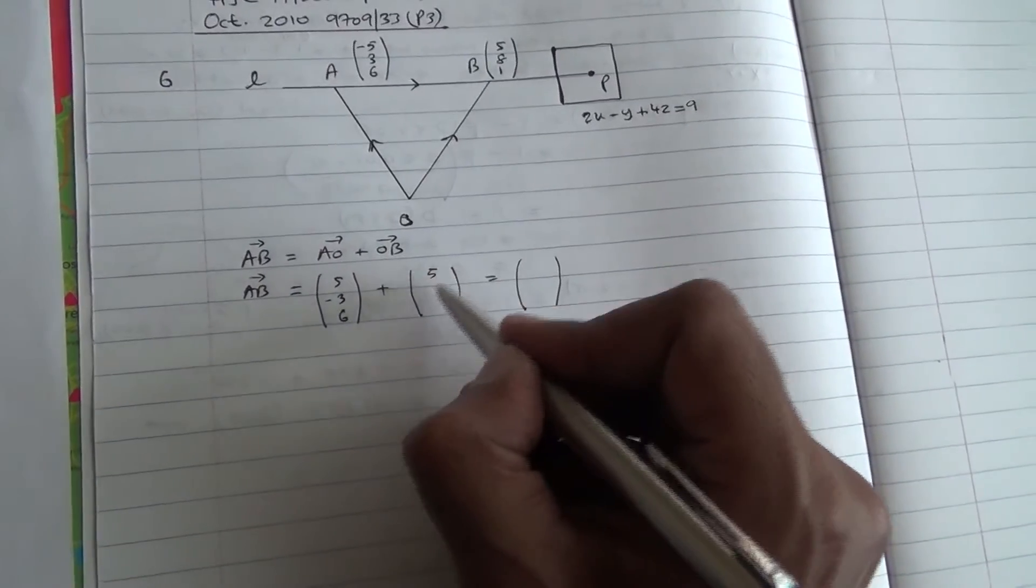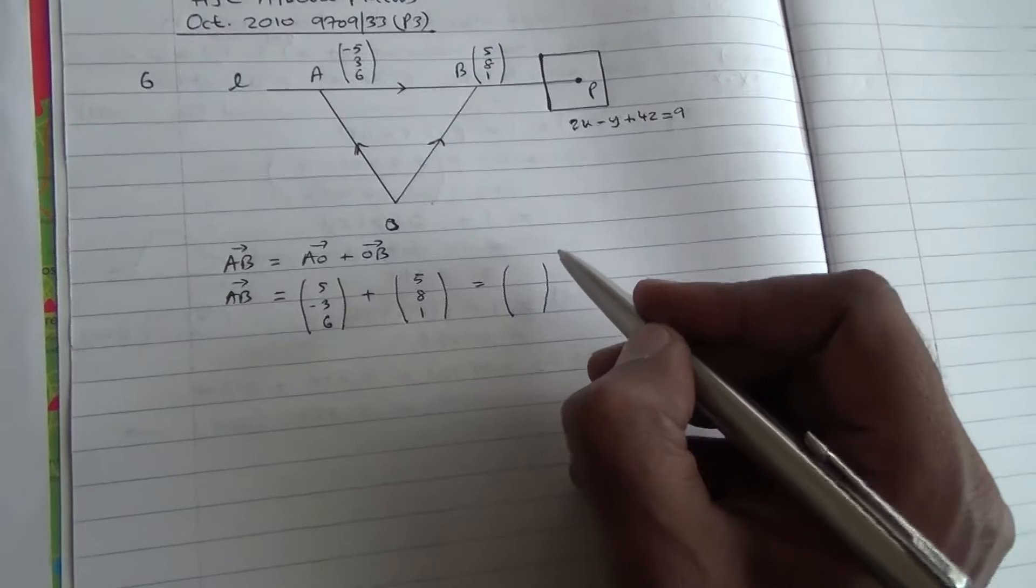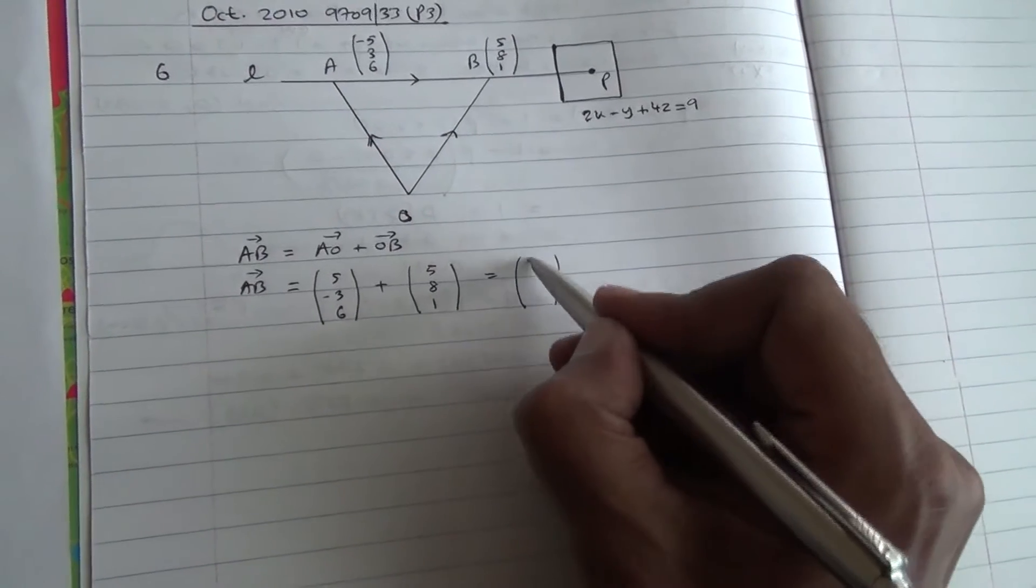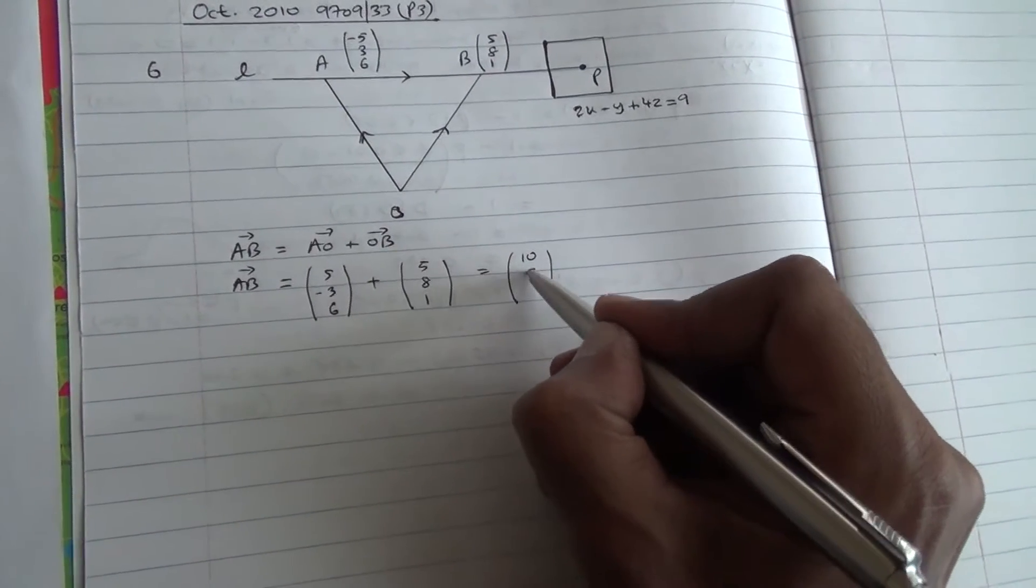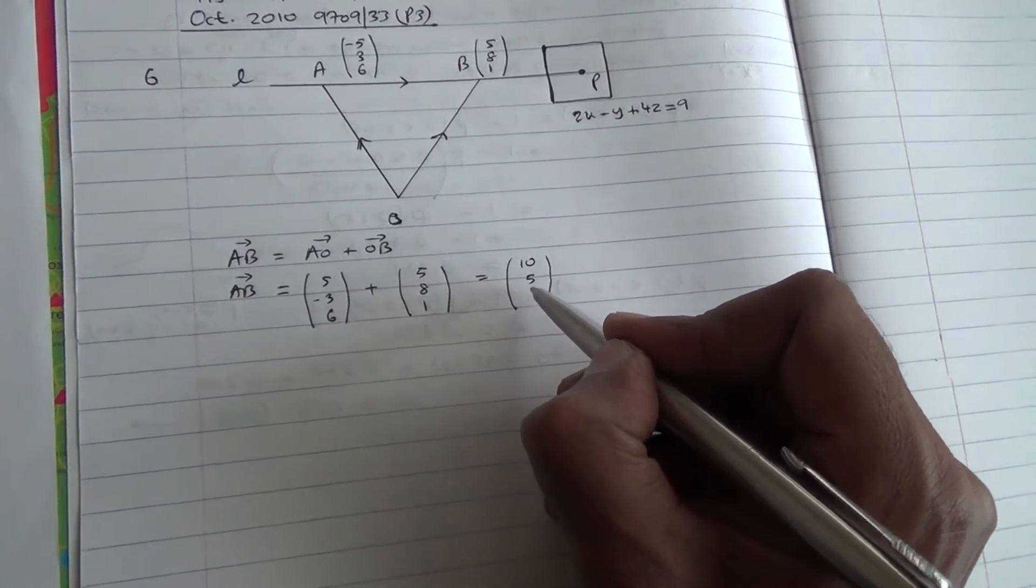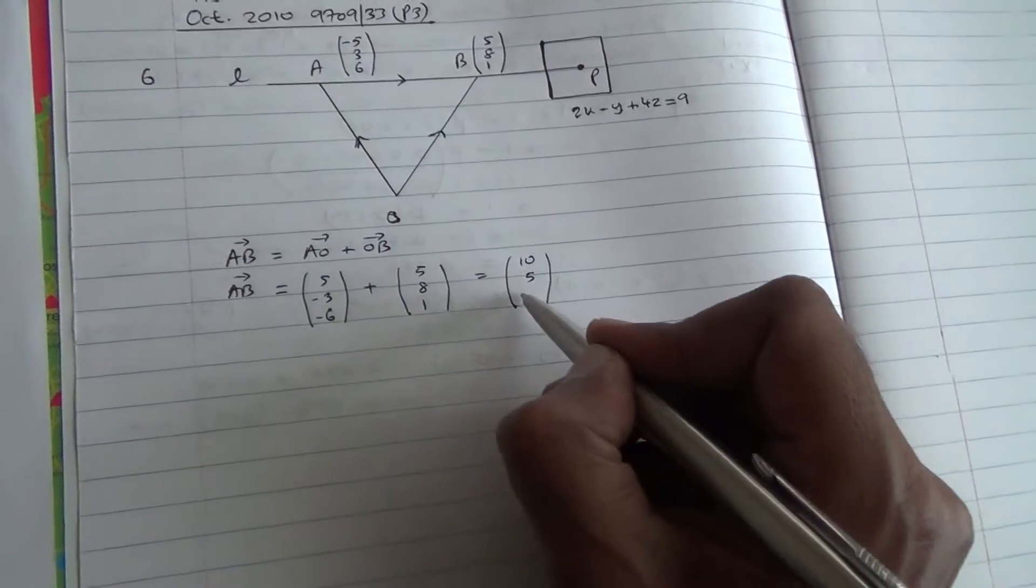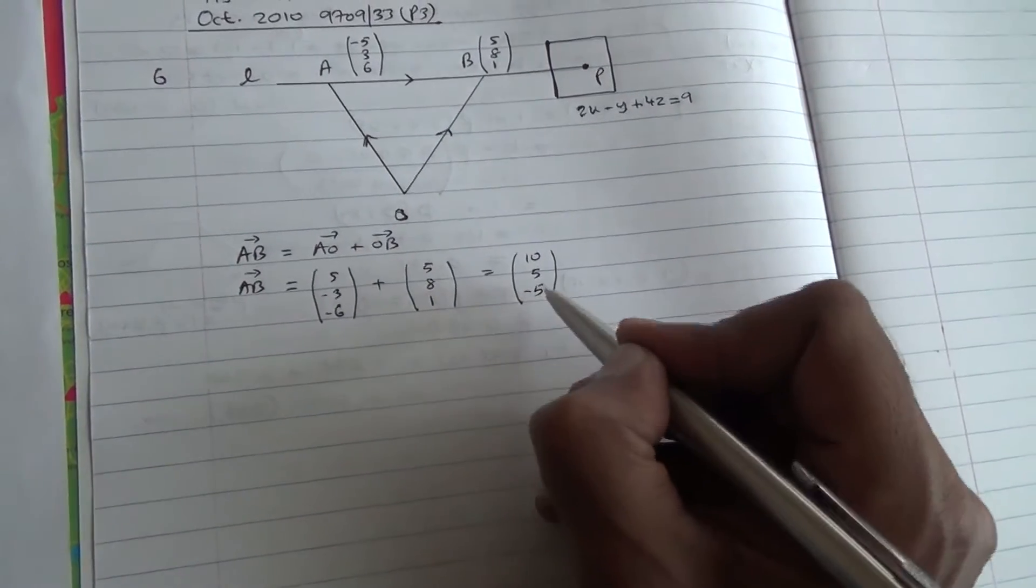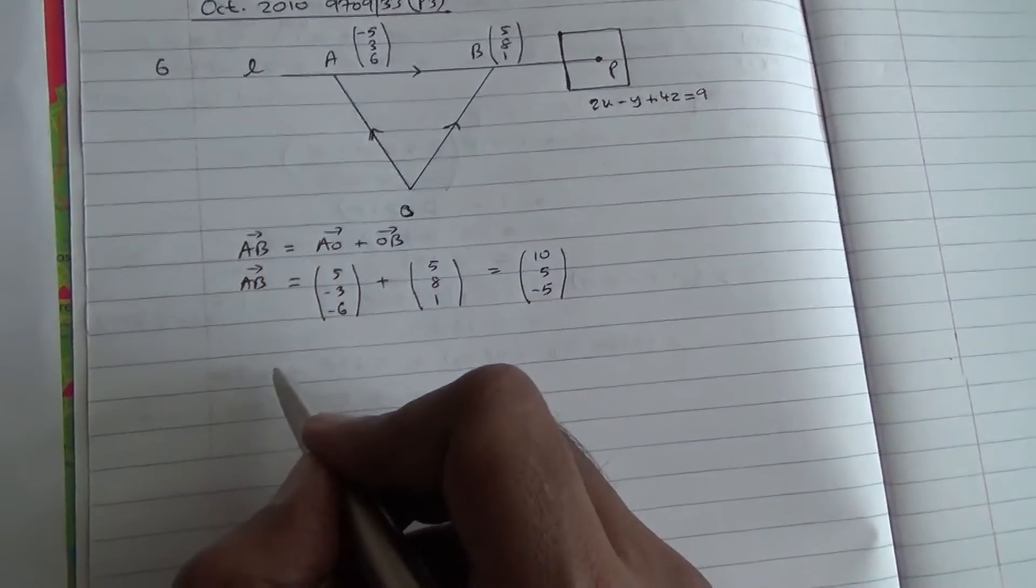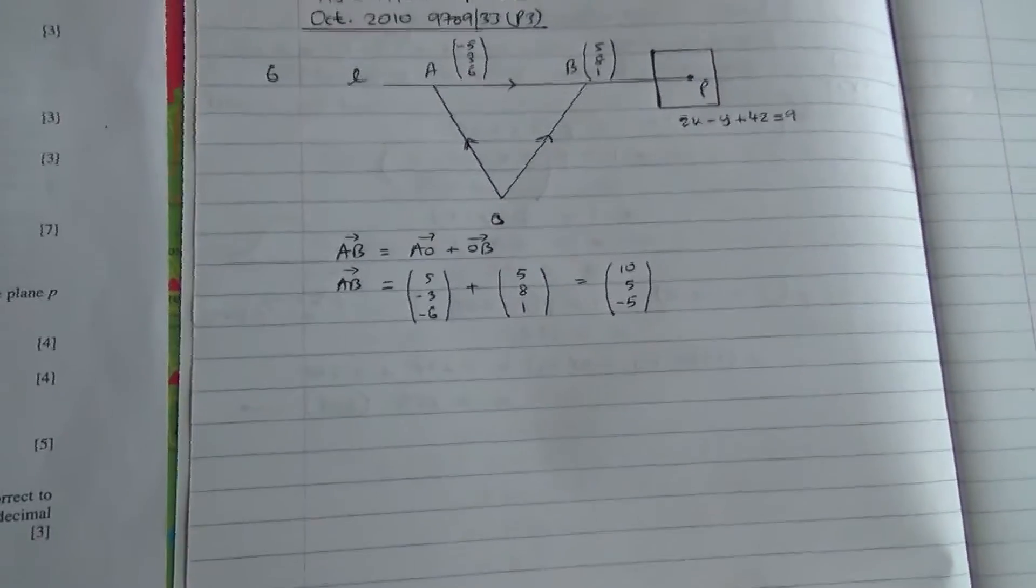Plus B, which is (5, 8, 1). And then you do the summing up, you're going to end up with (10, 5, -5). Yeah, -6 + 1 is -5. All right, so how are we going to find the vector equation of line AB then?